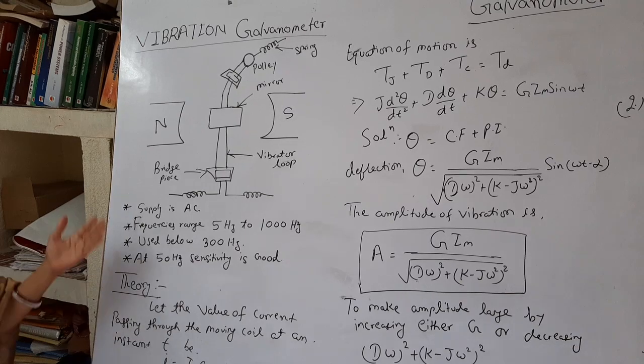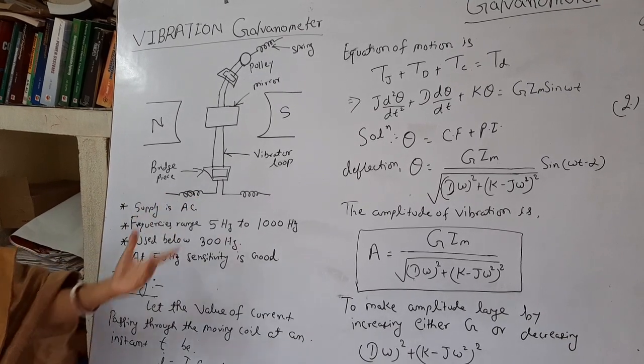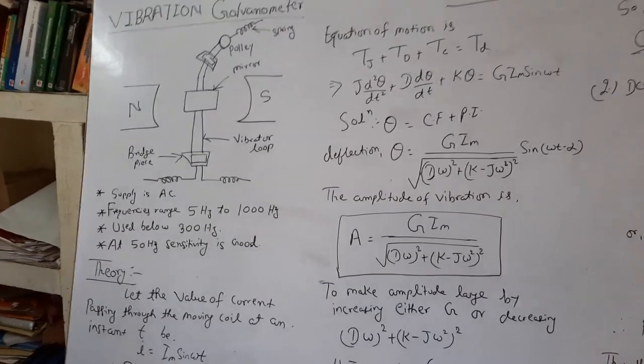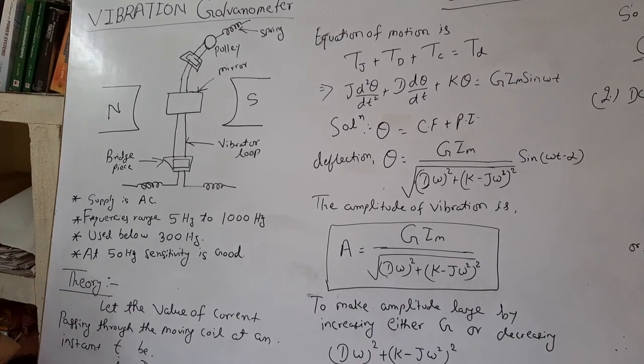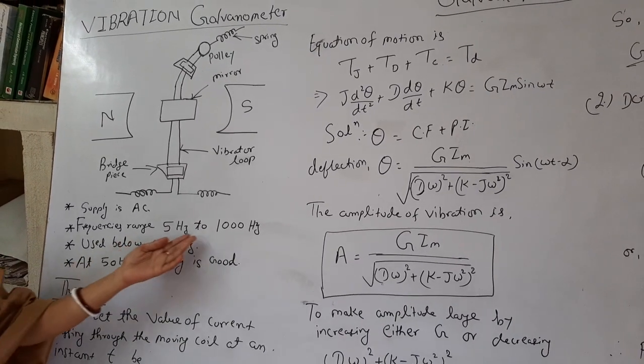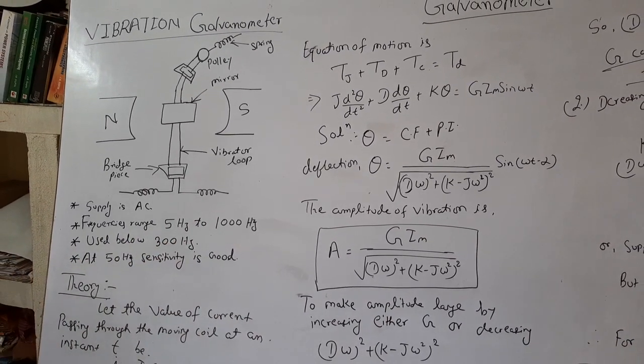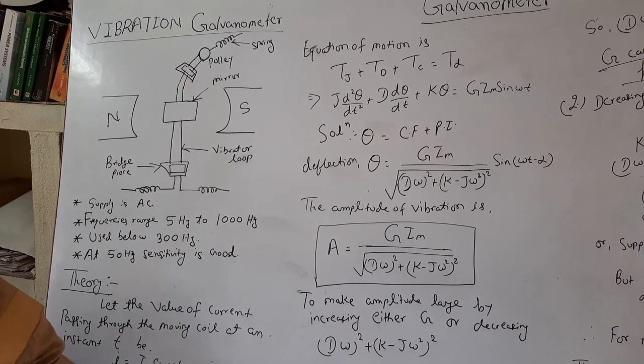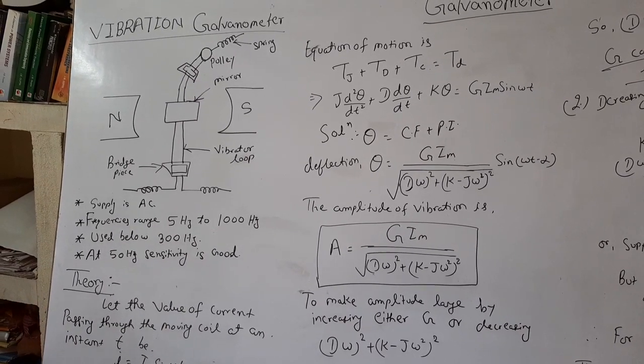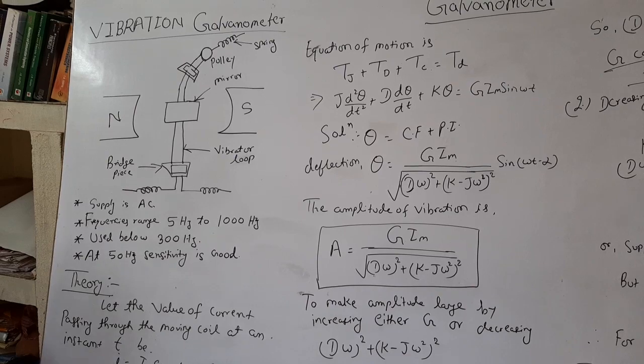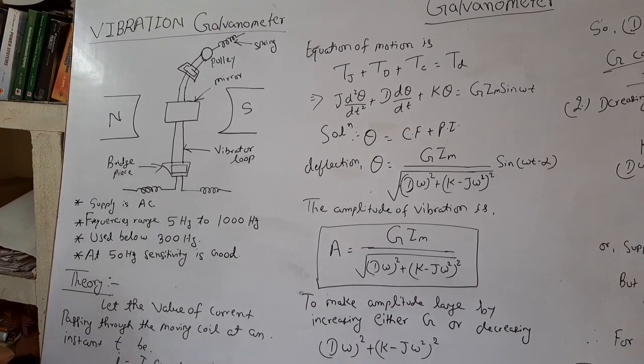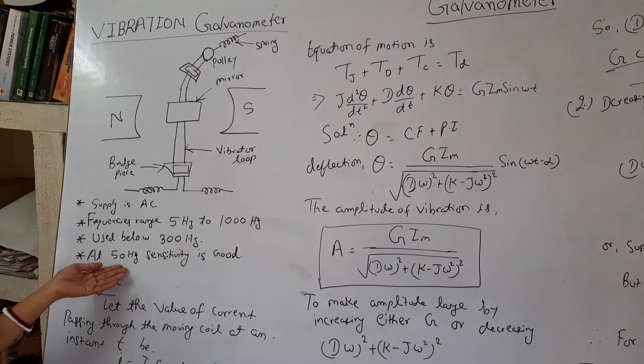So here, as already discussed, that supply is of AC and the frequency range used to measure is 5 hertz to 1000 hertz. But basically we use 300 hertz for the stable operation and it has good sensitivity at 50 hertz frequency.